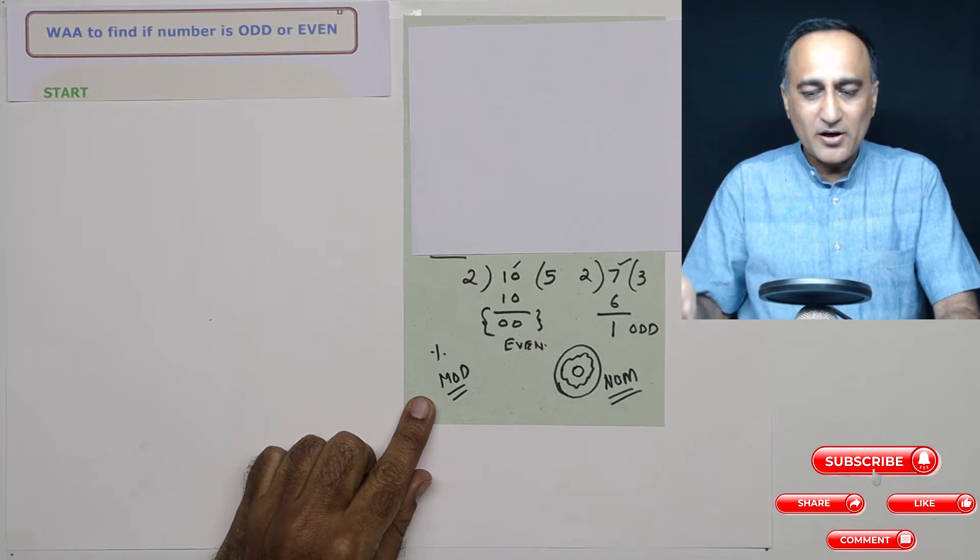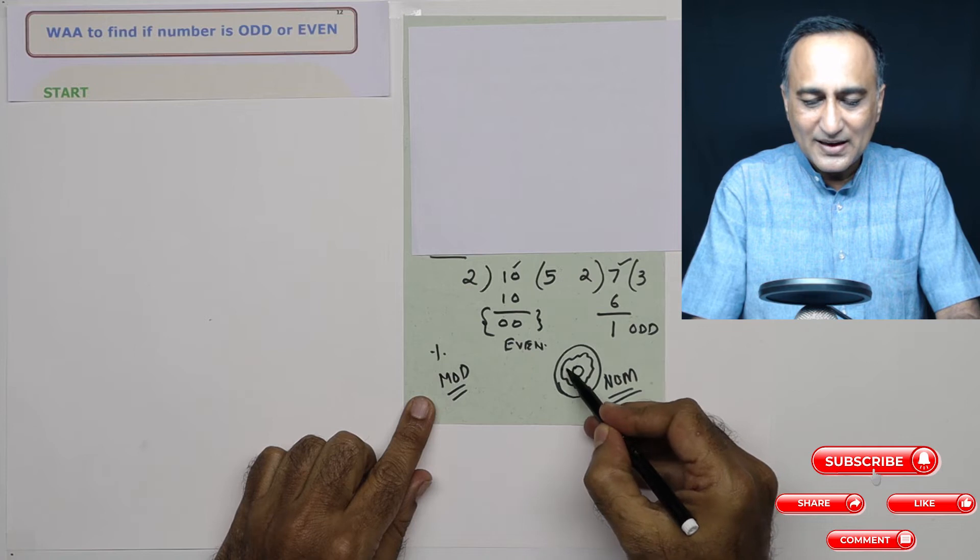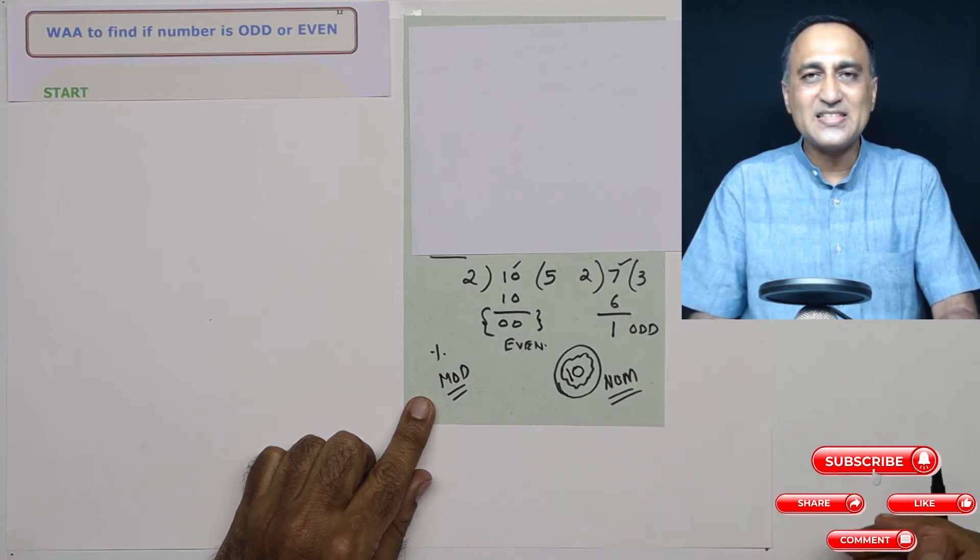Then the next step, what I will do is I will ask the user to enter a value of number. Let's say he enters n as the number.